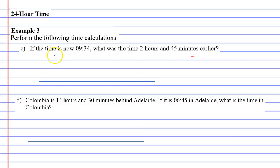Okay, we're back at example 3 and we're on to our more complicated questions, questions C and D. Question C says, if the time is now 9.34 hours, what was the time 2 hours and 45 minutes earlier?